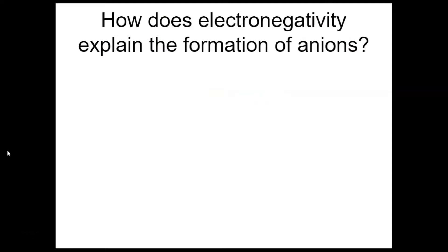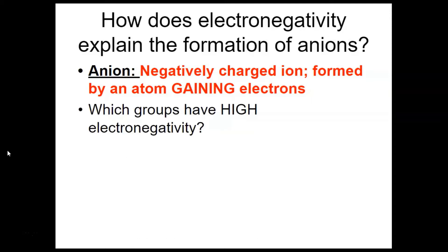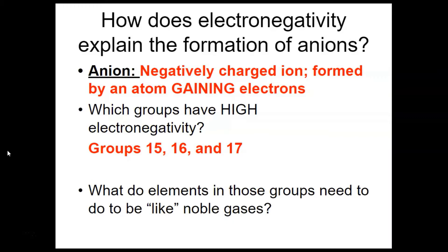Since electronegativity is related to gaining electrons, it explains the formation of anions. Anions are negatively charged ions formed when an atom gains electrons — since electrons have a negative charge, the atom overall becomes negatively charged. Groups 15, 16, and 17 have high electronegativity, and these elements need to gain electrons to be like noble gases. Their high electronegativity allows them to do that and be stable.